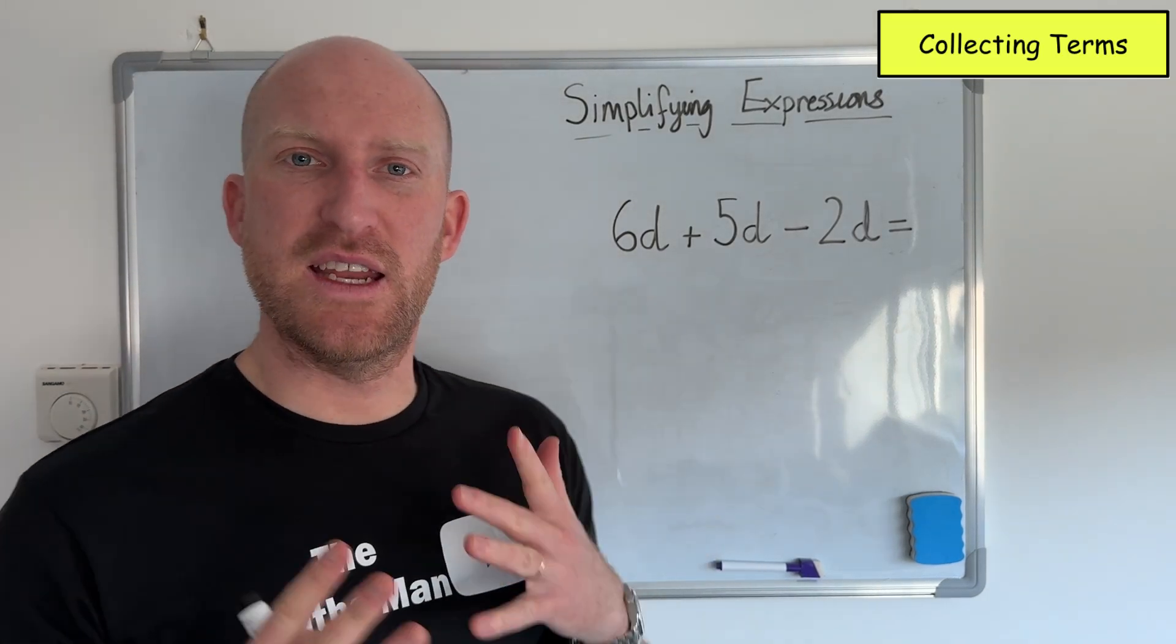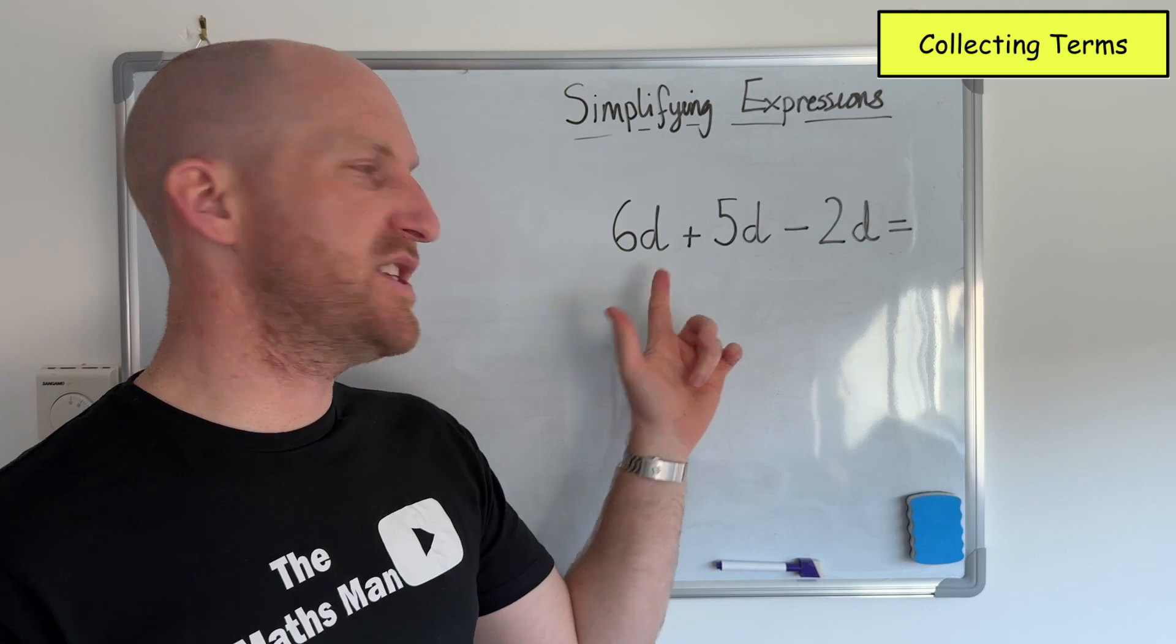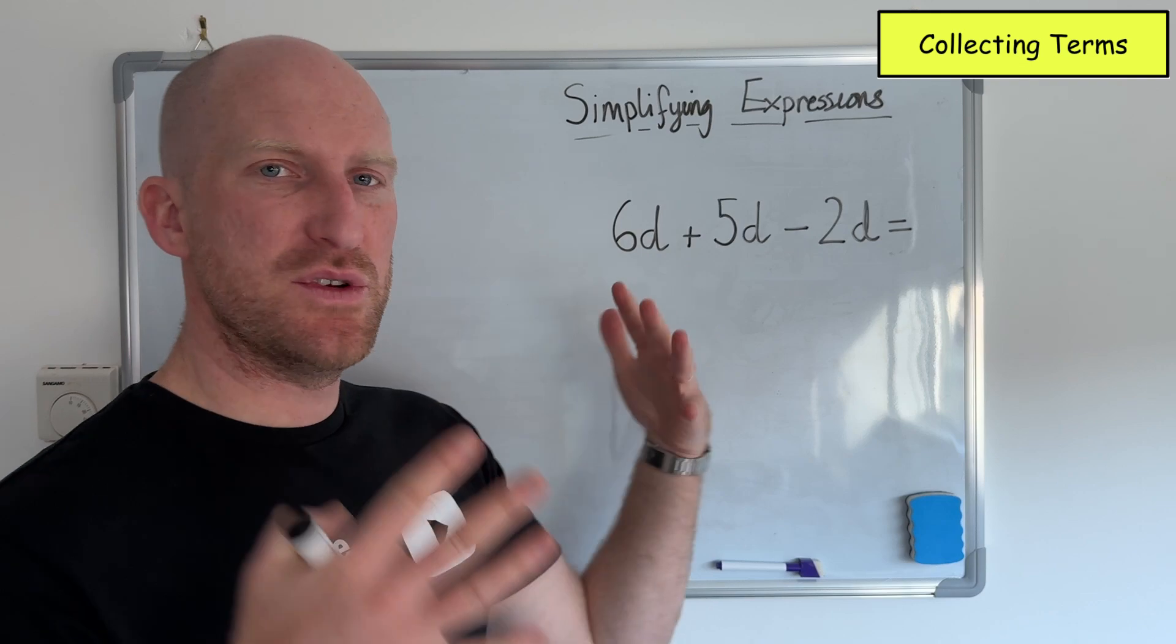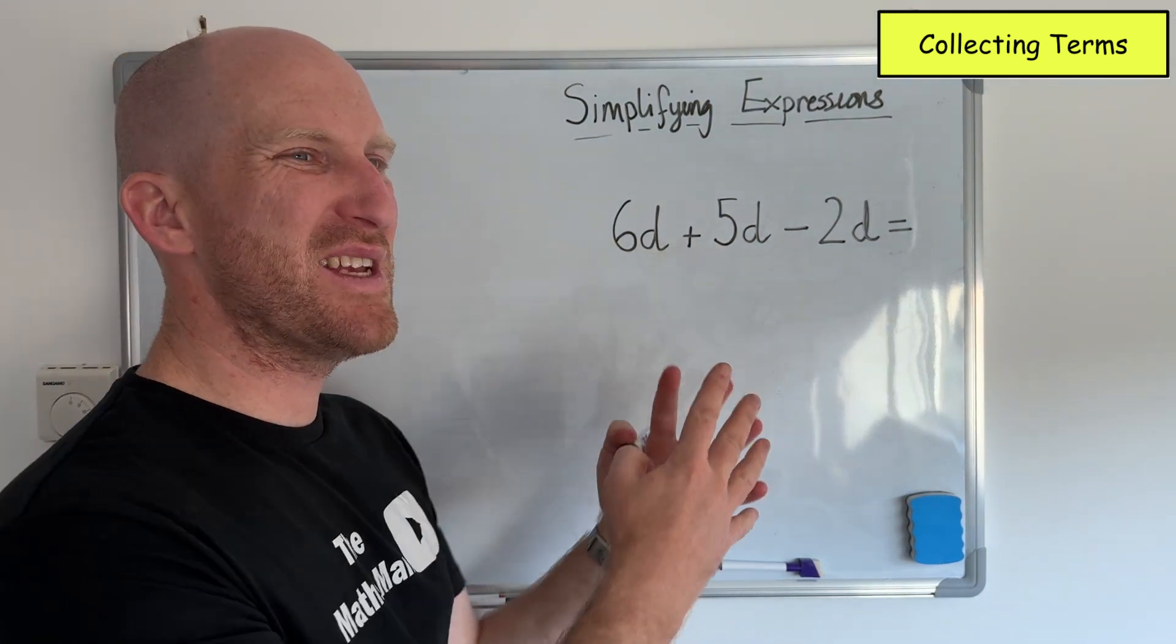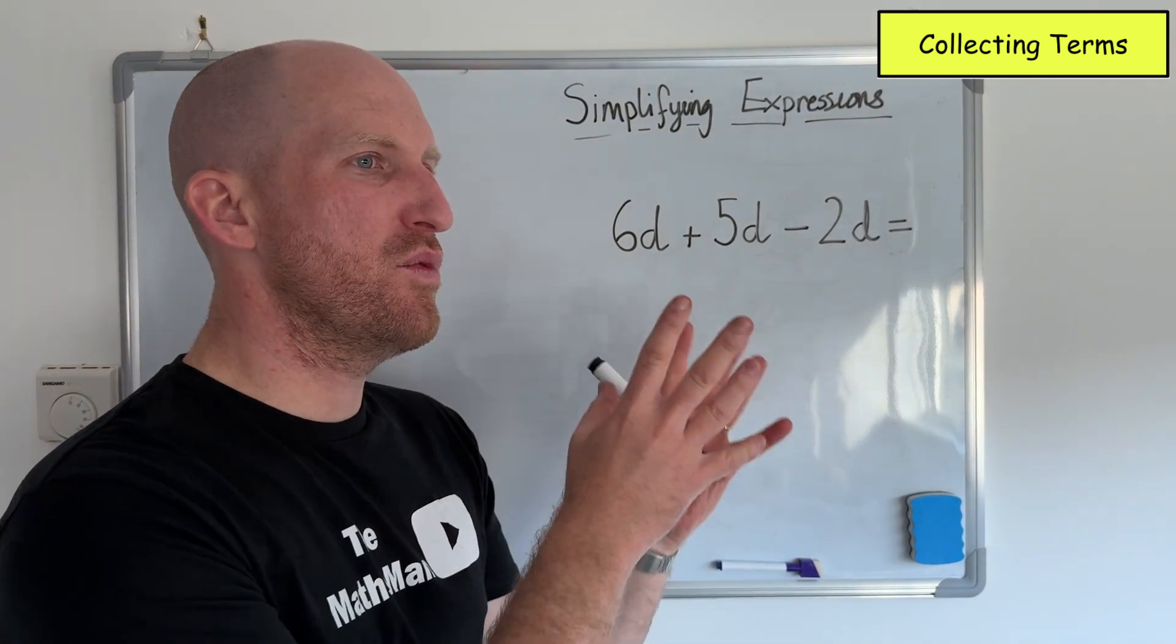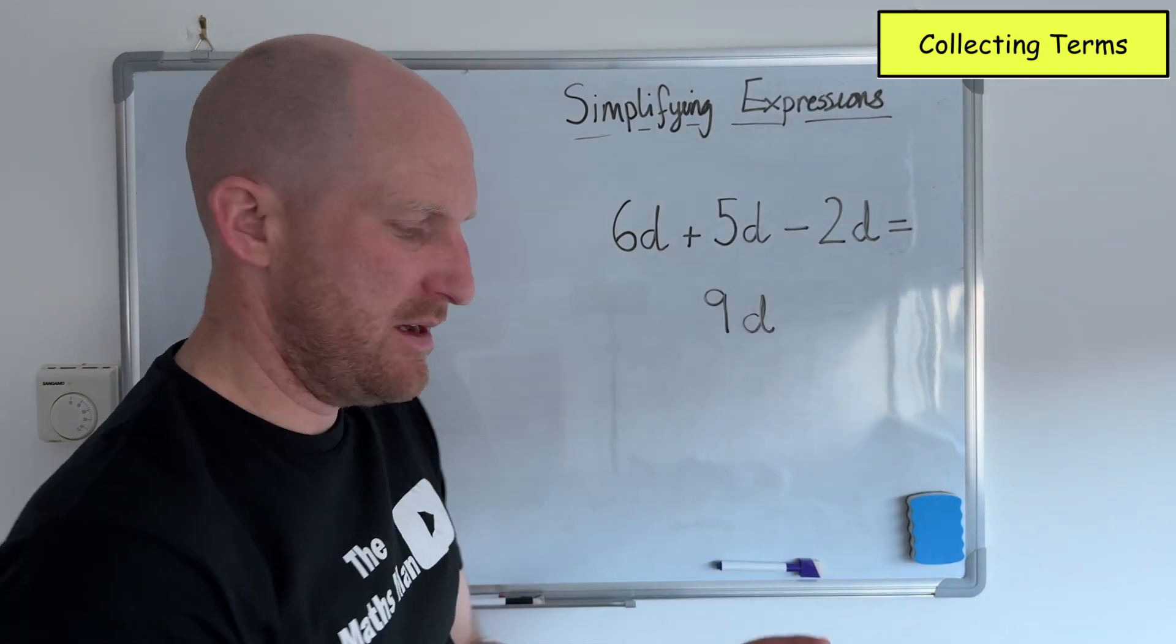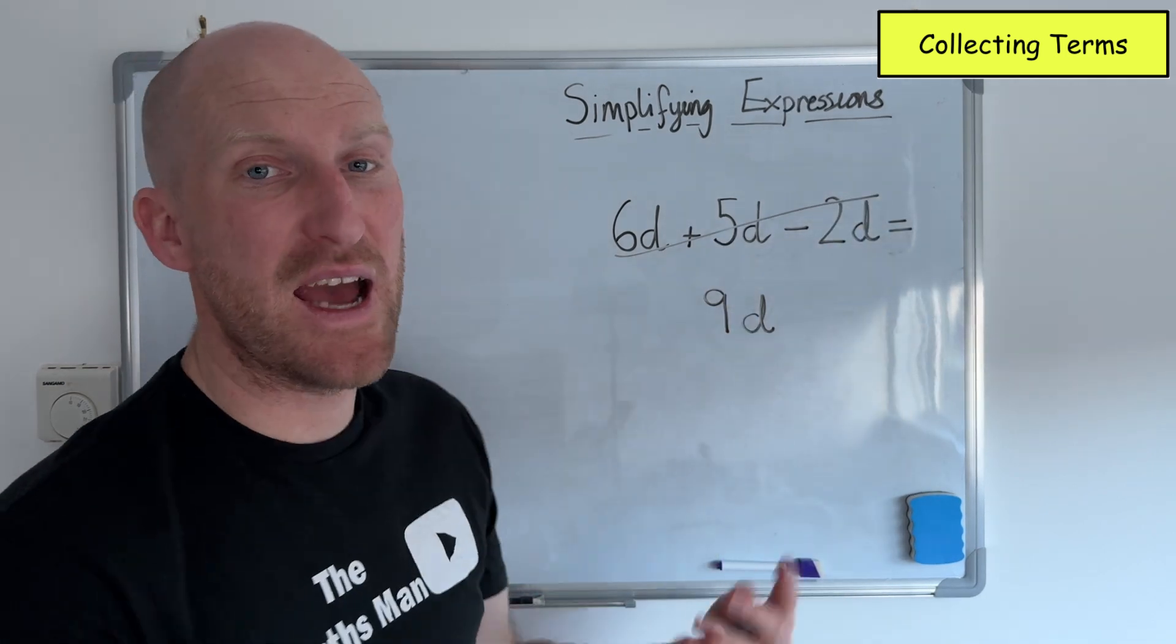So another slightly more complicated example of that collecting terms together would be this here. So I've got 6d plus 5d take away 2d. So if I was to collect those together I would have 6 and 5 that makes 11 but then I've got take away 2. So it would be 11 take away 2 and so that would then make all of those 9d. So I can simplify it by saying 9d.